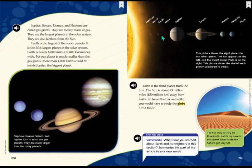Mercury, Venus, Earth, Mars, Jupiter, Saturn, Uranus, Neptune, Pluto. This picture shows the eight planets in our solar system. The sun appears on the left, and the dwarf planet Pluto is on the right. This picture shows the size of each planet compared to others. This diagram shows just how small the Earth is compared to how big the sun is.